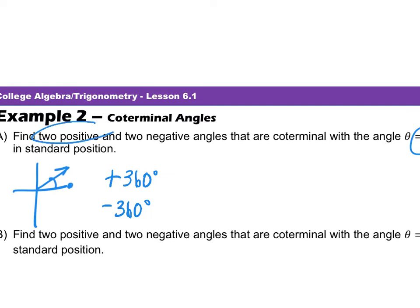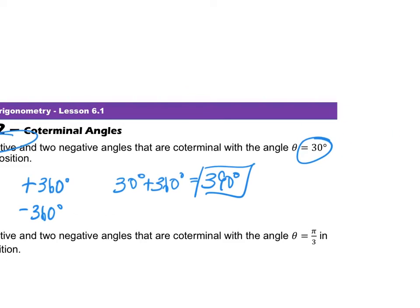So if I want to find two positives to 30 degrees, I would say, okay, 30 degrees. I'm going to add 360. That gives me how much? 390. So there's my first positive coterminal angle. Well, if I added another 360, that gives me 750 degrees. That's my second positive coterminal.